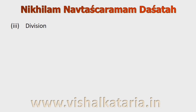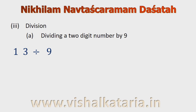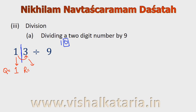We are starting with division of any two-digit number by 9 using Nikhilam Sutra. Let's take the example of 13 divided by 9. The base here is 10, which has one zero. So after the units place I will put a bar. The right-hand side of the bar gives the remainder and the left-hand side gives the quotient. The quotient is 1 and the remainder is the previous digit plus 3, which is 4.